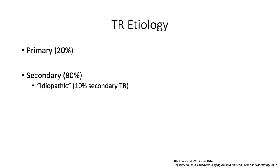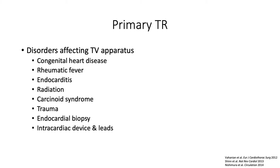The etiology of TR can be primary or secondary, and the vast majority fall into the latter category. Of the 10% within the secondary TR, they are considered idiopathic, which we will cover in upcoming slides. Primary TR includes disorders that affect the tricuspid valve apparatus, including congenital heart disease, rheumatic fever, endocarditis, radiation, carcinoid syndrome, trauma, endocardial biopsy, and intracardiac device leads.